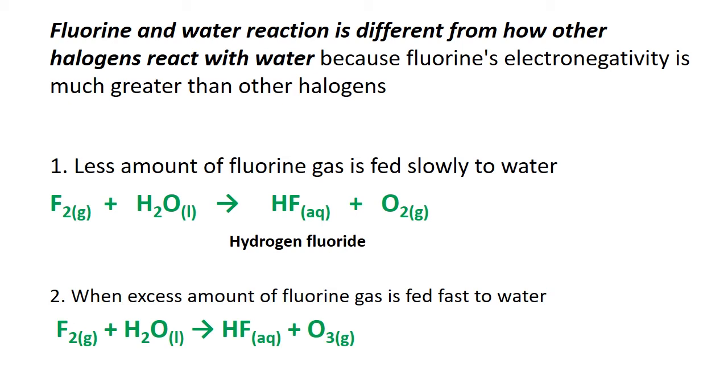Water and fluorine reaction will give products as below. When less amount of fluorine gas is fed slowly to water, this reaction will give hydrogen fluoride and oxygen gas as products.